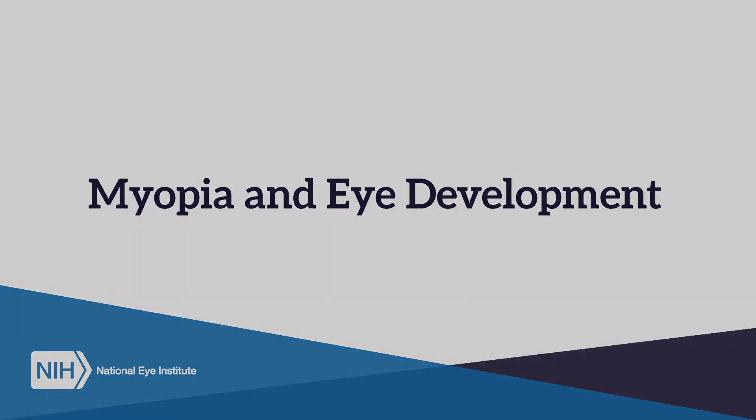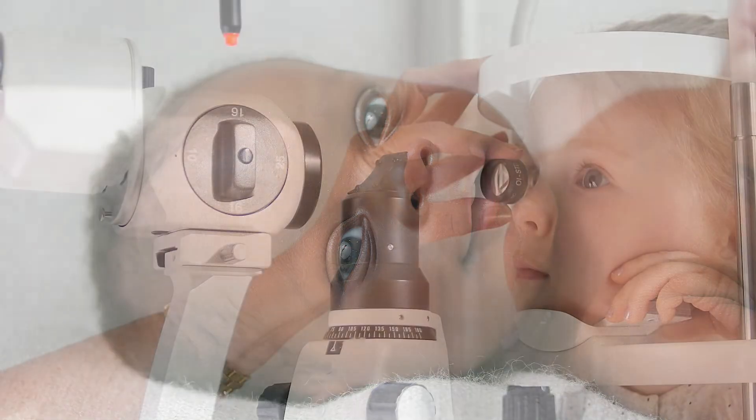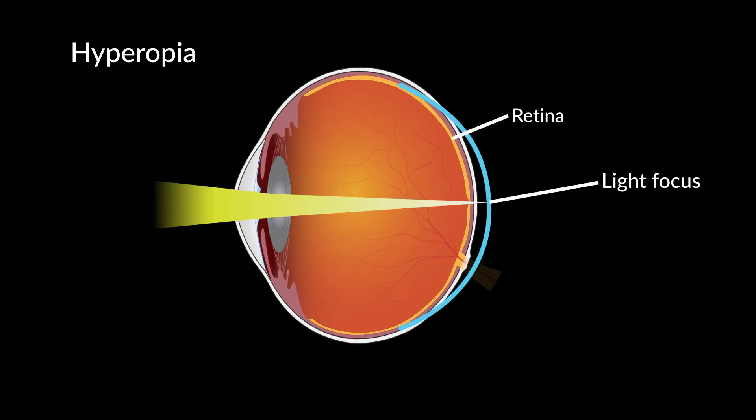Myopia and eye development. When babies are born, their eyes are hyperopic, or farsighted, meaning that their eyes are too short front to back. This means light focuses behind the retina, making close-up images blurry.